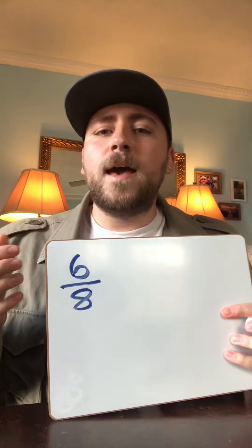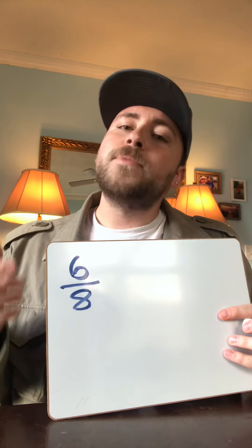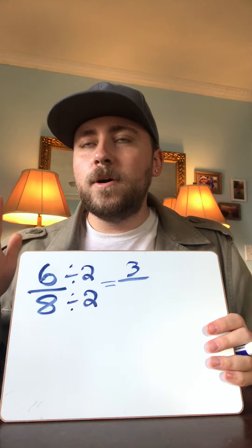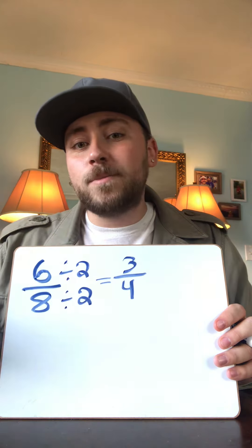We're going to start with the fraction six-eighths. When I'm looking at six and eight, I'm trying to think about what they have in common, and one of those things is that they're both even. So I know if it's even, I'm going to be able to divide by two. I'm going to divide the top by two and the bottom by two. Six divided by two is three, and eight divided by two is four. So we have three-fourths. Now I've got an odd number and an even number, and I know nothing goes into three except one and itself, so the simplest form of six-eighths is three-fourths.